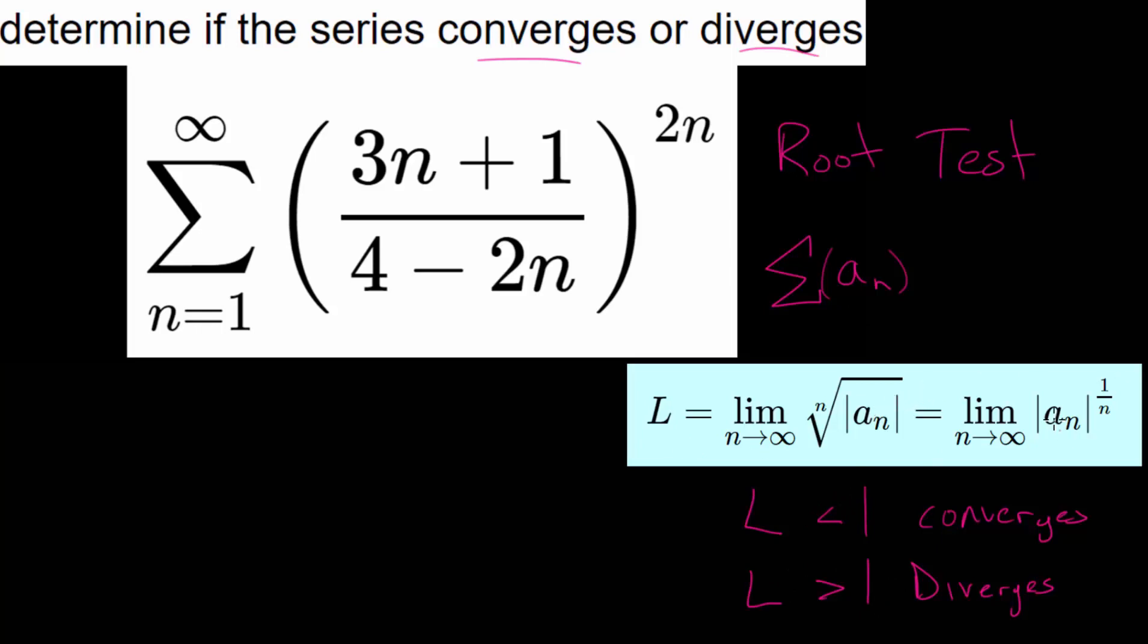So to apply this, we'll look at our term, a sub n, and that's just this expression here, raised to the 2n power. And we'll take its absolute value and raise it to the 1 over n power and determine what the value for L would be. So let's write this out.